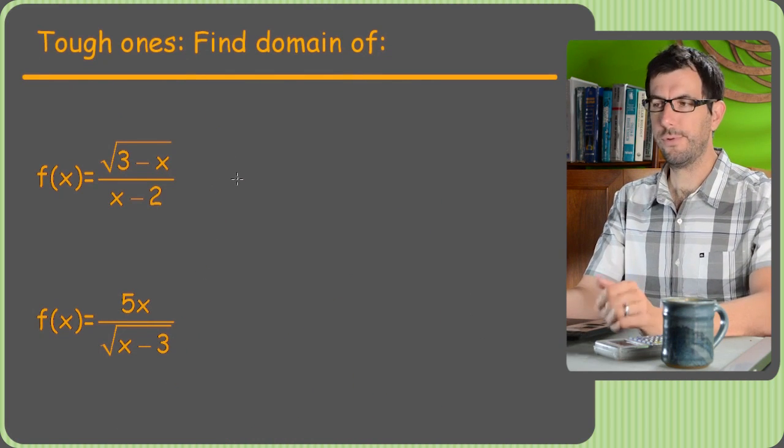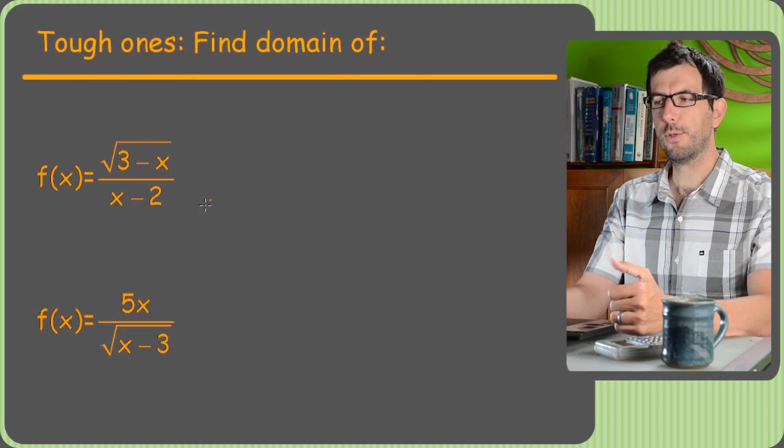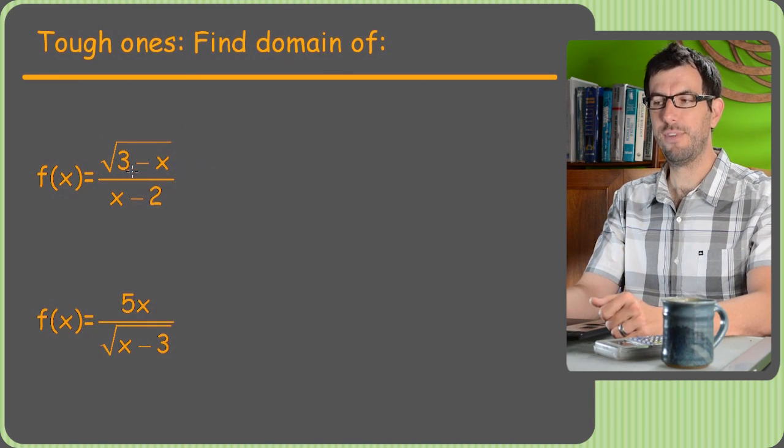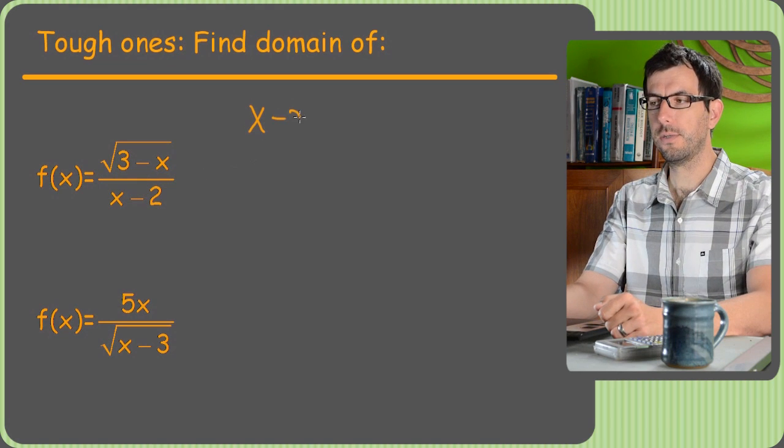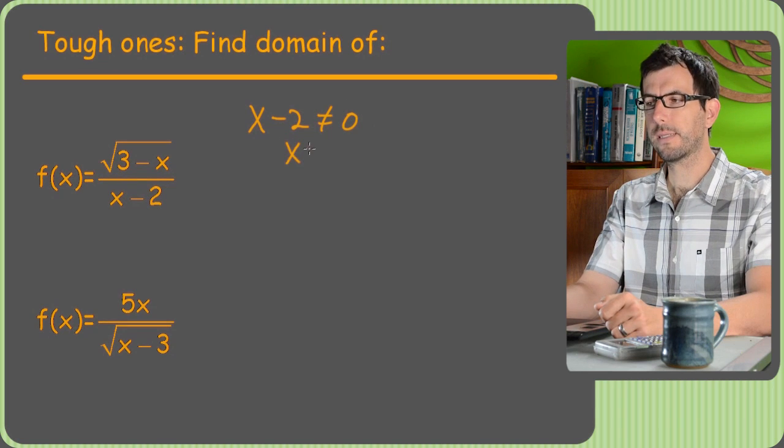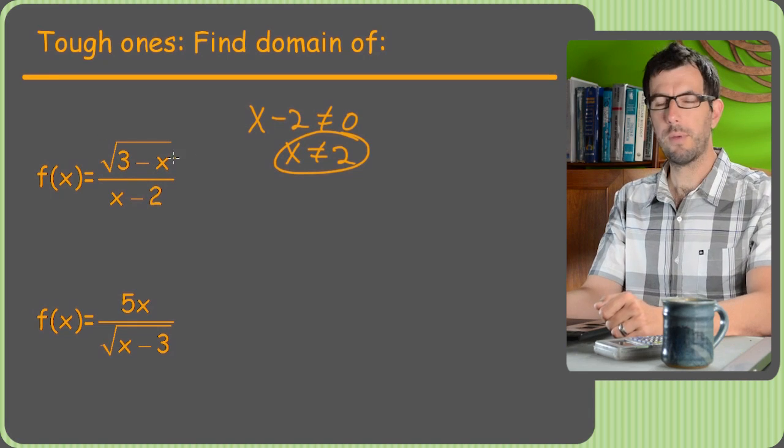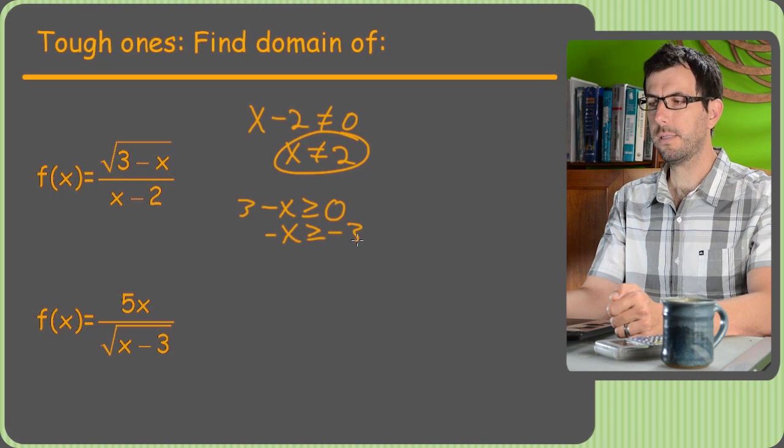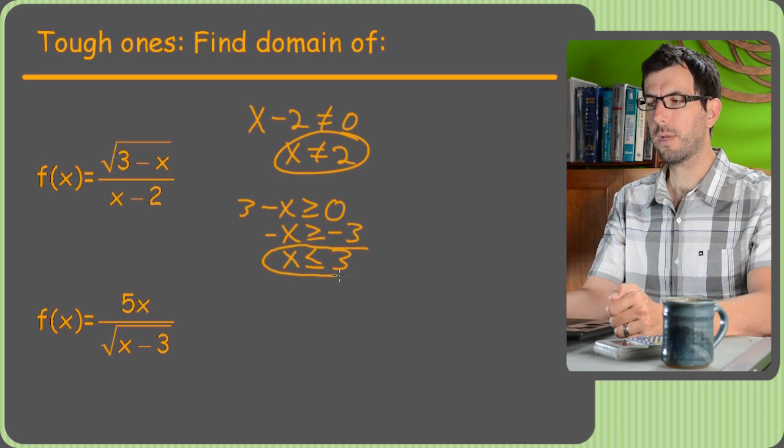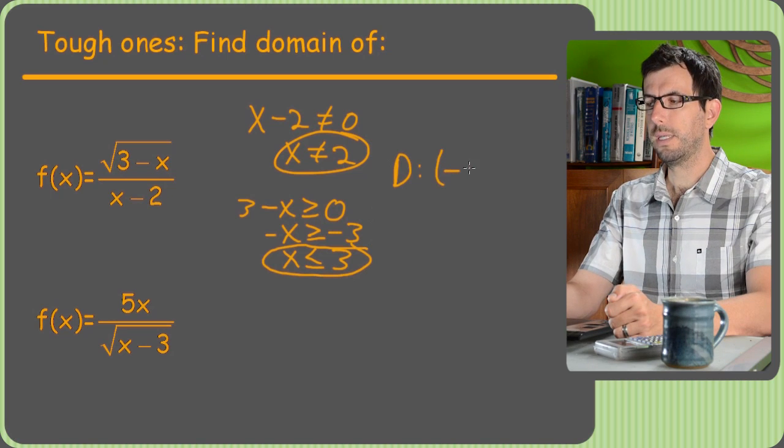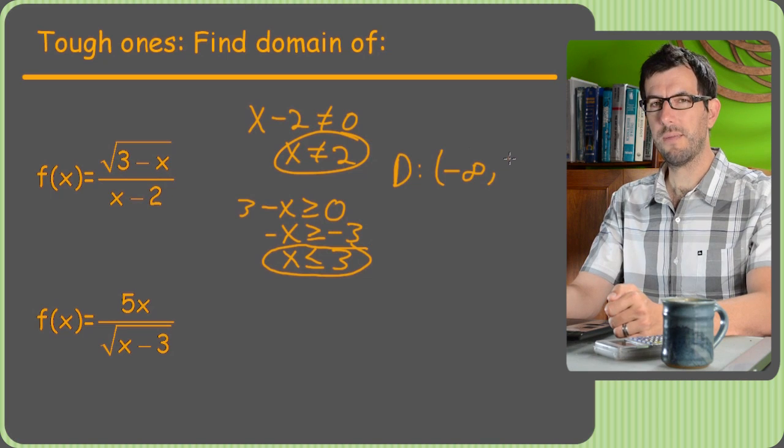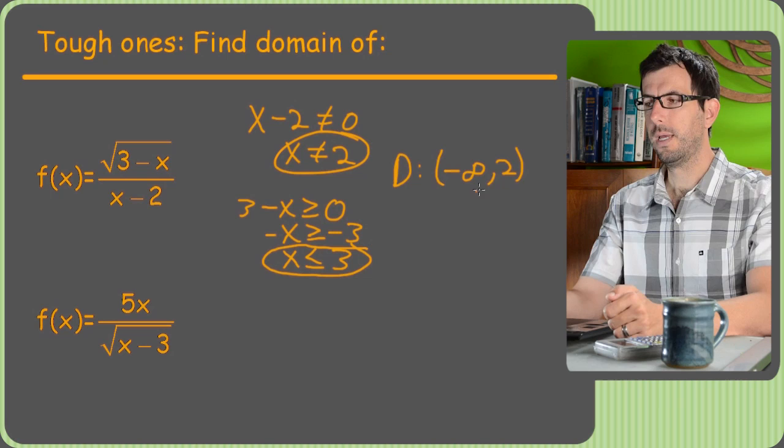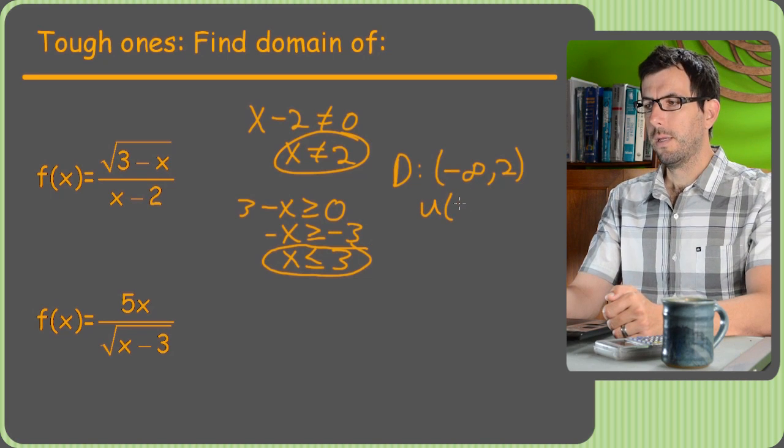Here's a couple of trickier ones where we have to combine rules. This problem includes both the things I'm worried about not doing: it has both the square root and division. So I have to do both problems separately. First, x minus 2 cannot equal 0. Add 2 to both sides, that means x cannot equal 2. Then also, 3 minus x has to be greater than or equal to 0. This is the one we just came across. Negative x is greater than or equal to negative 3. Then multiply everything by negative 1, which is going to flip our sign, and we'll get x is less than or equal to 3. So the domain in interval notation would be negative infinity to 2, and then union 2 to 3.